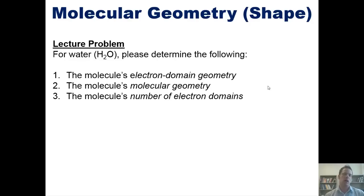This takes us then to a beautiful problem. For water, H2O, please determine the following. It's electron domain geometry. That is, the geometry or shape in which we count everything, including lone pair electrons on that central atom. The molecule's molecular geometry in which we only count atoms as contributing to the shape and ignore the lone pairs. And third, the molecule's number of electron domains. I'm not going to show you the answer to this problem here, but we'll invite you to pause this and look back a couple of slides that I just showed you and see if you can figure out the answer on your own. And more importantly, make sure that you understand why the answer is what it is.